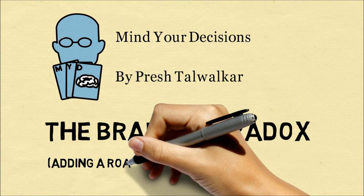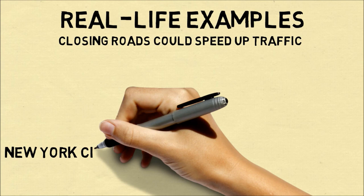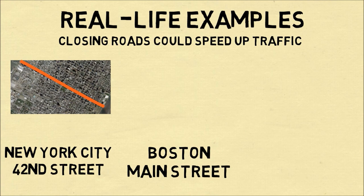which states that adding a road could possibly slow down traffic. This is a counterintuitive phenomenon, but researchers have actually identified roads where the existence of these roads slows down traffic, and actually closing those roads could speed up traffic.